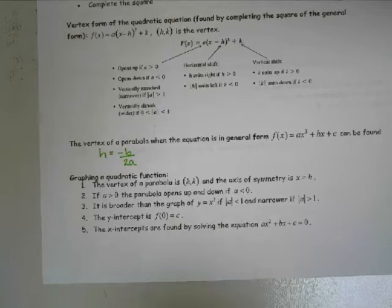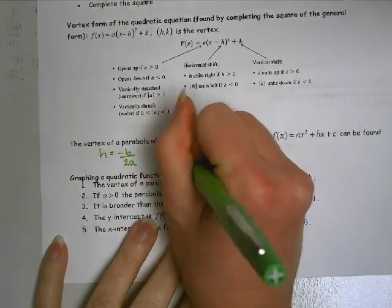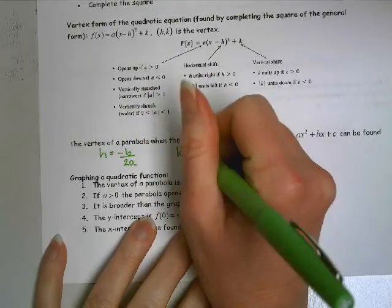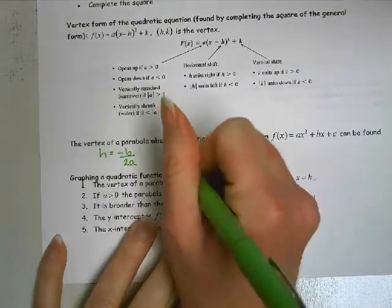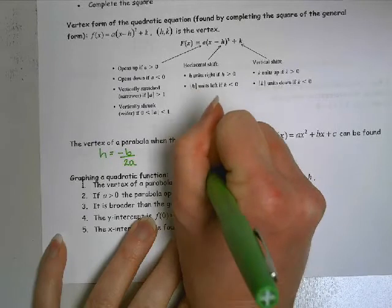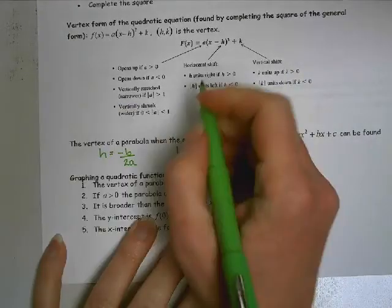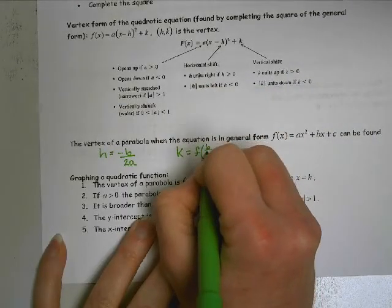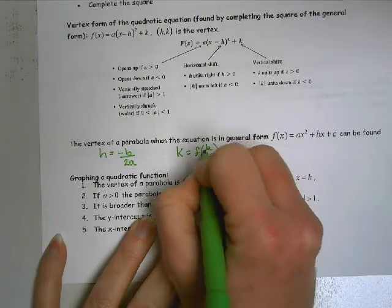It's going to give me the x value. But, to get the k value, or the y value of my vertex, I then have to plug whatever I got from here into the original function. So that's what this means. And I'll show you. We'll do it here in just a minute.